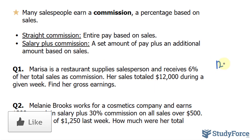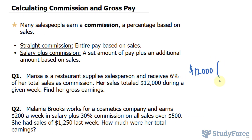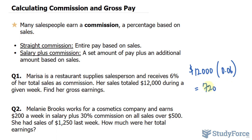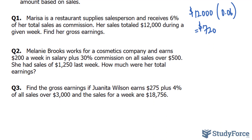We'll take $12,000, the amount that she sold, and multiply it by the percentage, which we convert to a decimal by dividing by 100. So 6% becomes 0.06. Using our calculator, 12,000 times 0.06 gives us 720. This means she earned $720 that week when she sold $12,000 worth of material.